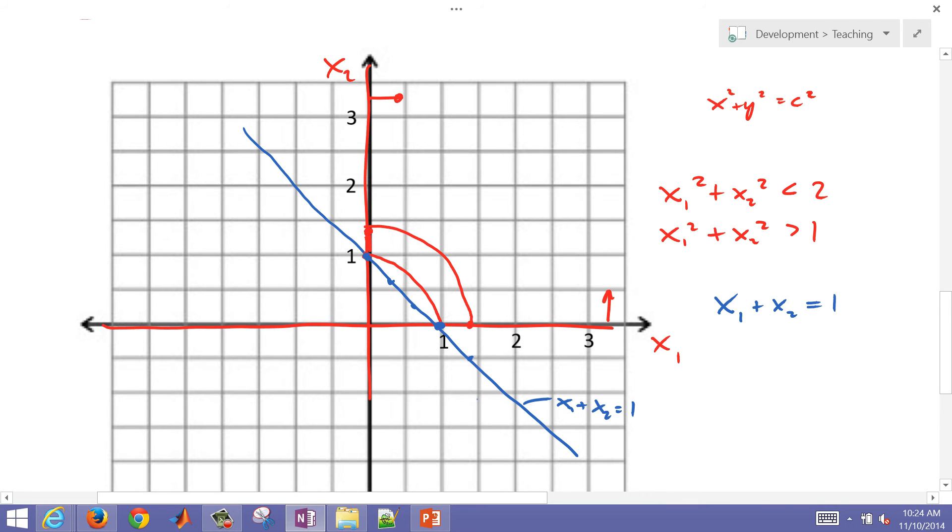But let's say it equals 2 instead. x1 plus x2 equals 2. Then I'm going to plot all of my, this is just where objective function equals 2. It actually intersects right here. So as I go this way, I'm going to increase the objective function. So if I'm trying to maximize x1 plus x2, I want to pick a point within this region that is going to give me the highest objective function. So I think we just found it right there.